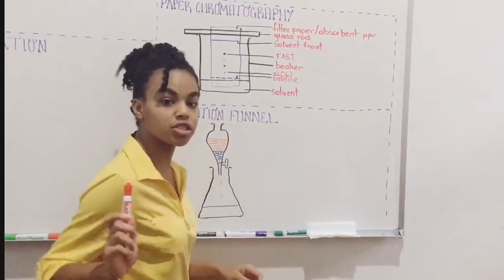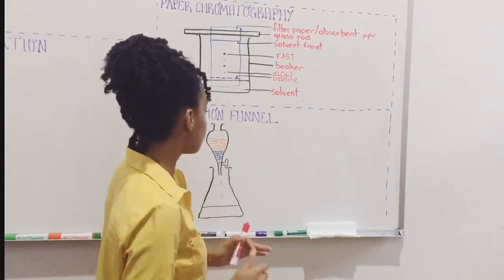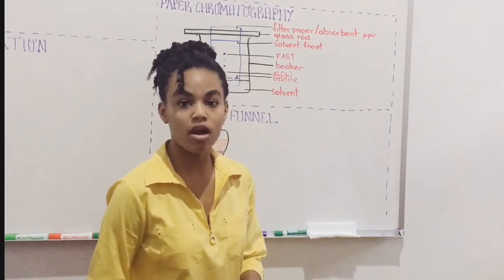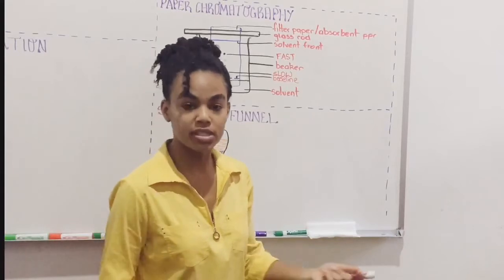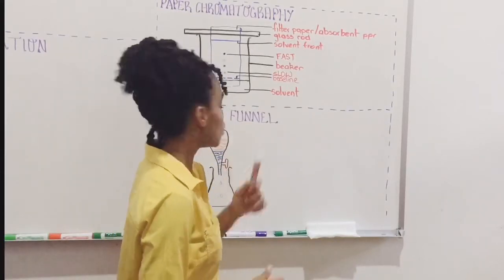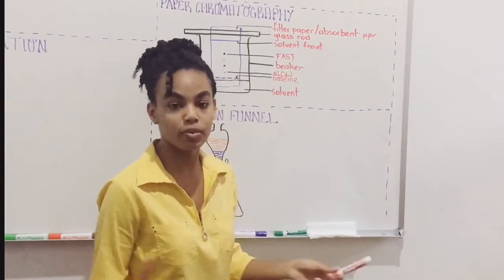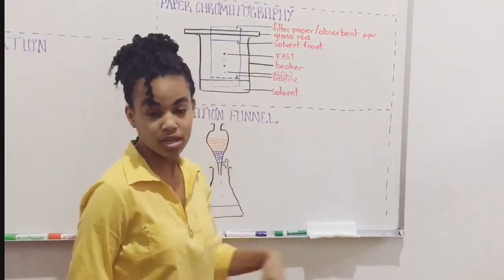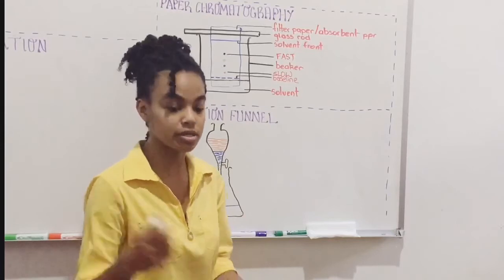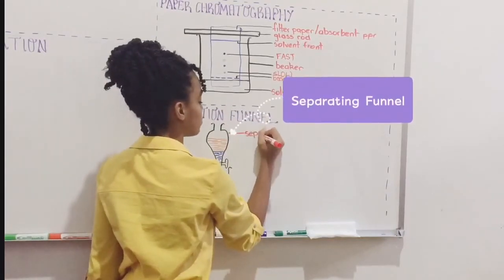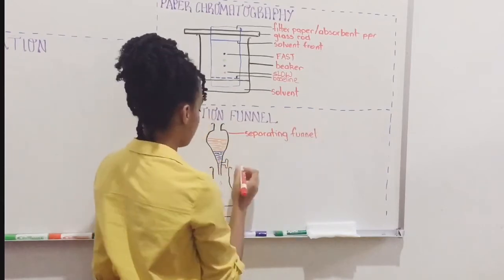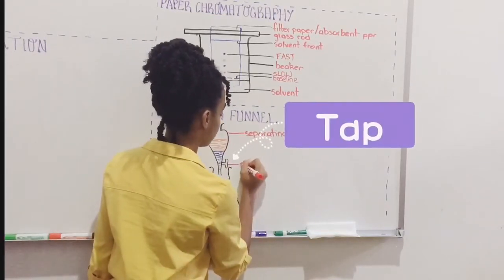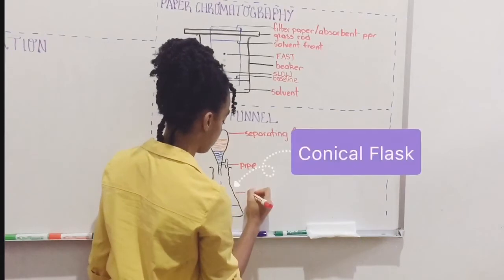So now we're going to be looking at the separation funnel. In a separation funnel, the purpose is to separate two liquids that are immiscible — for example, a mixture of water and oil, which is a suspension. So we can use a separation funnel to separate these two components. Here we have a separating funnel, and this is the tap that turns the top of the separating funnel on or off. This is our collecting or conical flask.